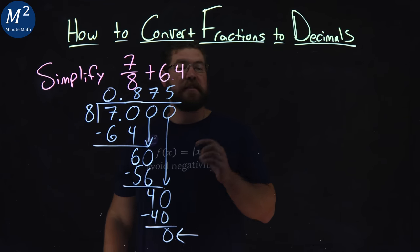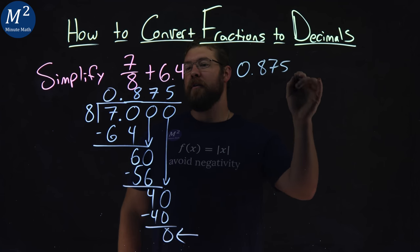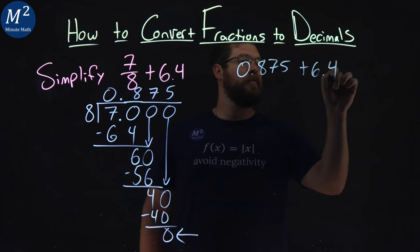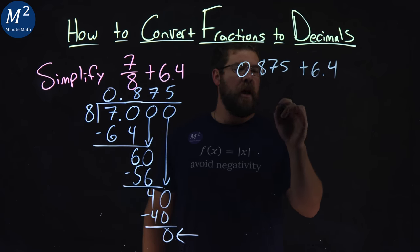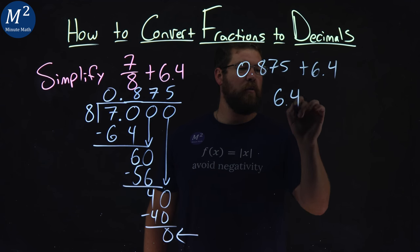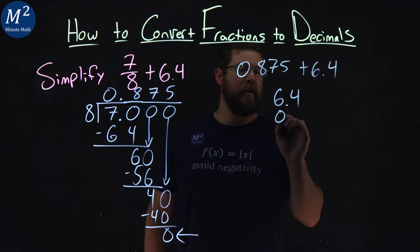So, 7 eighths plus 6.4 is the same thing as 0.875 plus 6.4. Now, let's go add these numbers. Let's write it vertically here. If we have 6.4 here, and I put 0.875 underneath it.